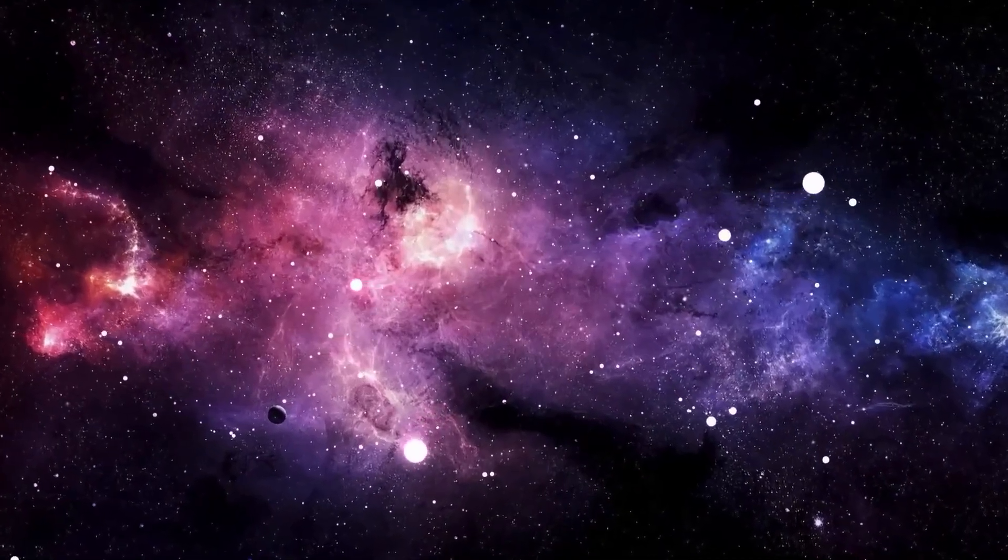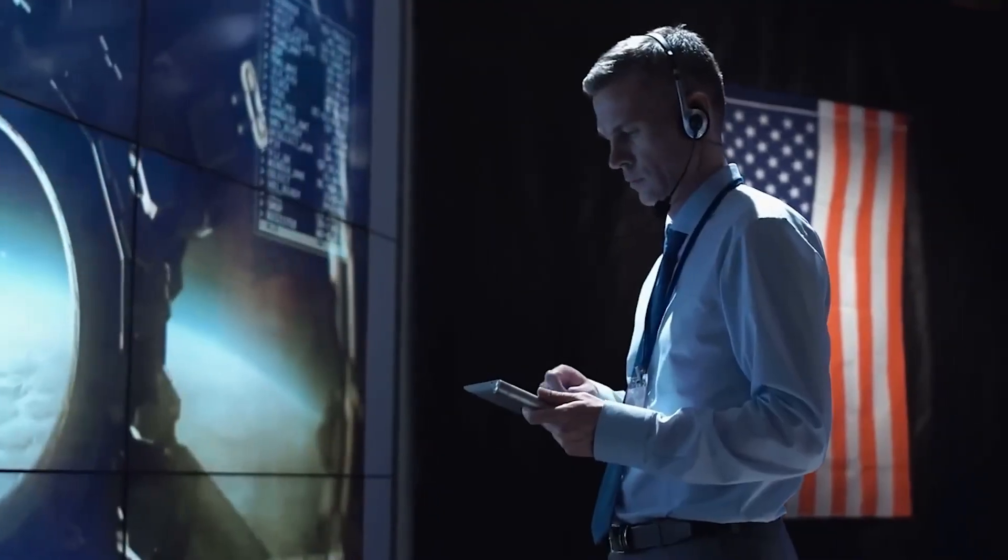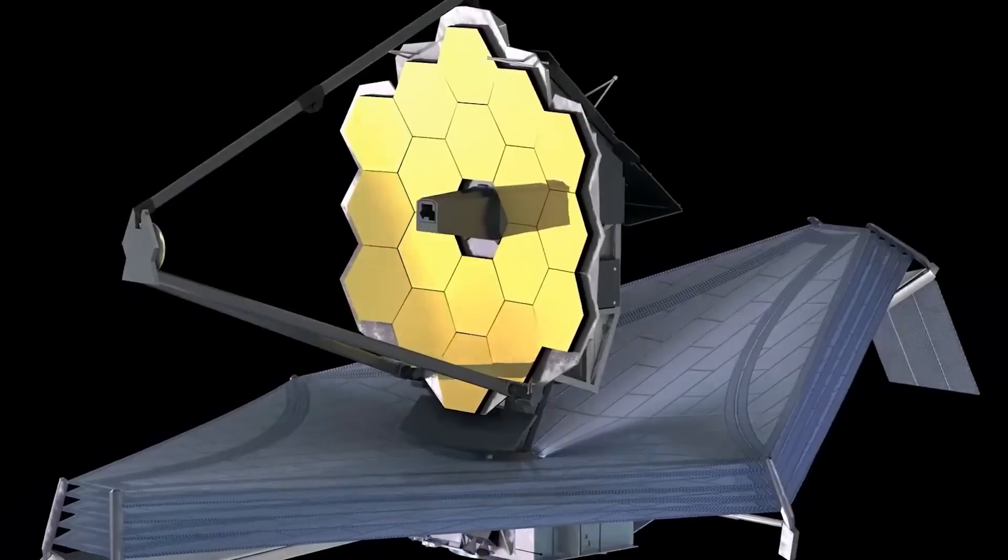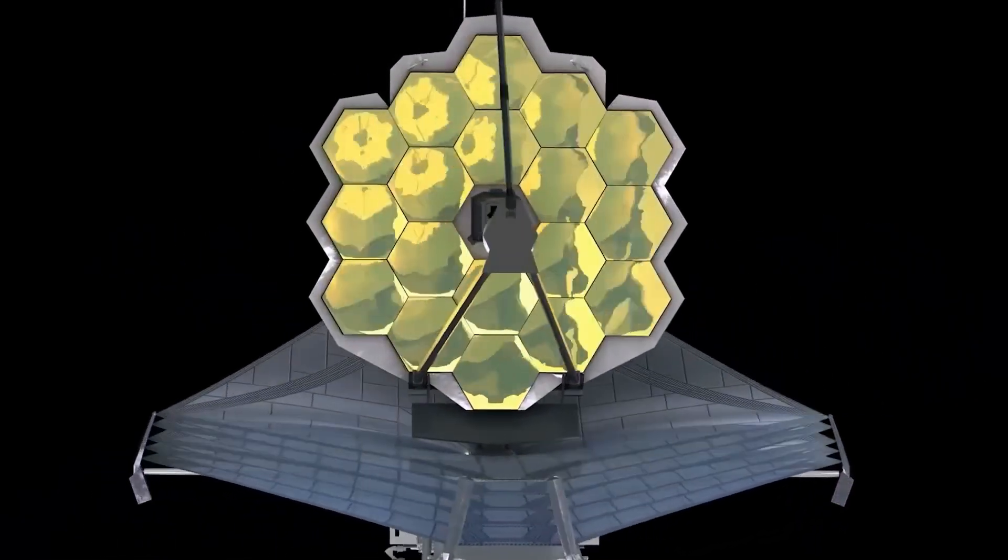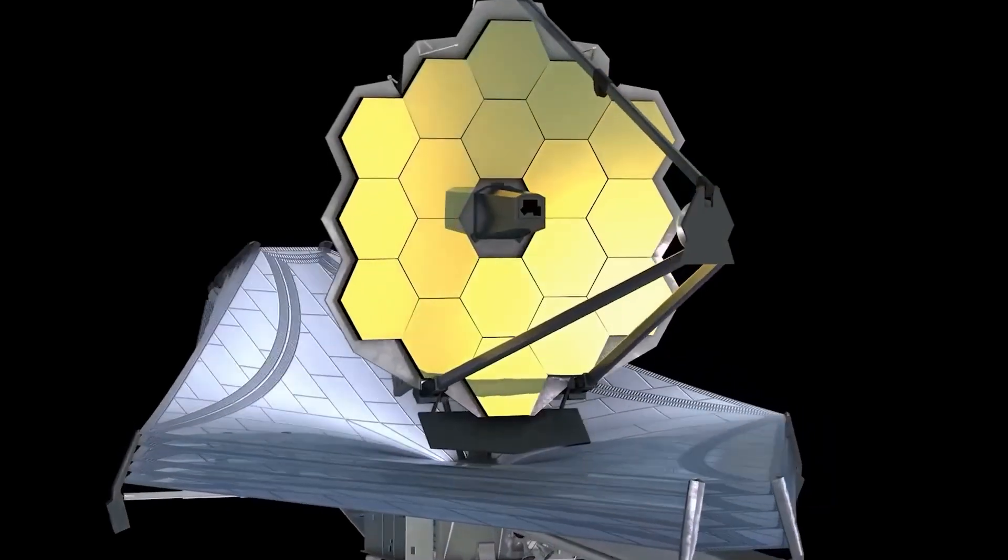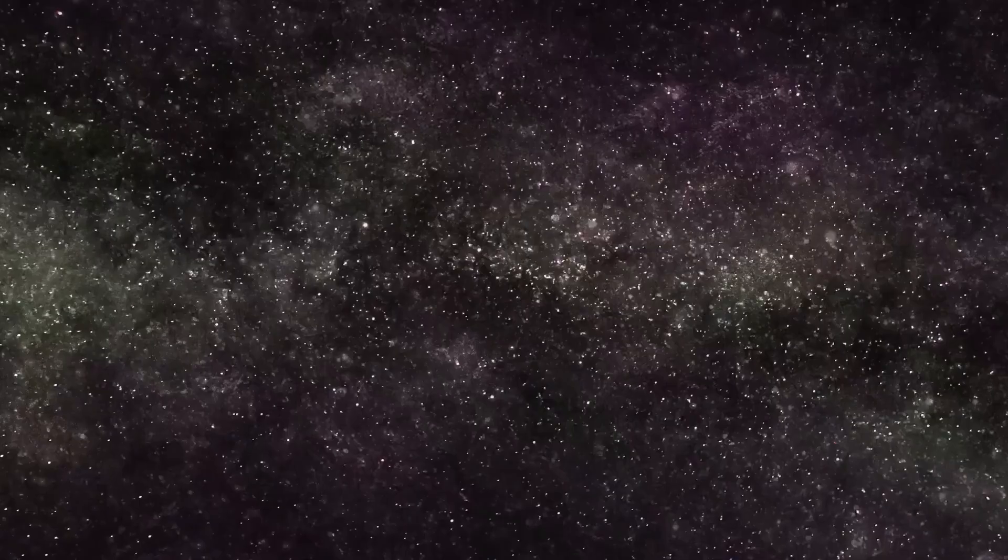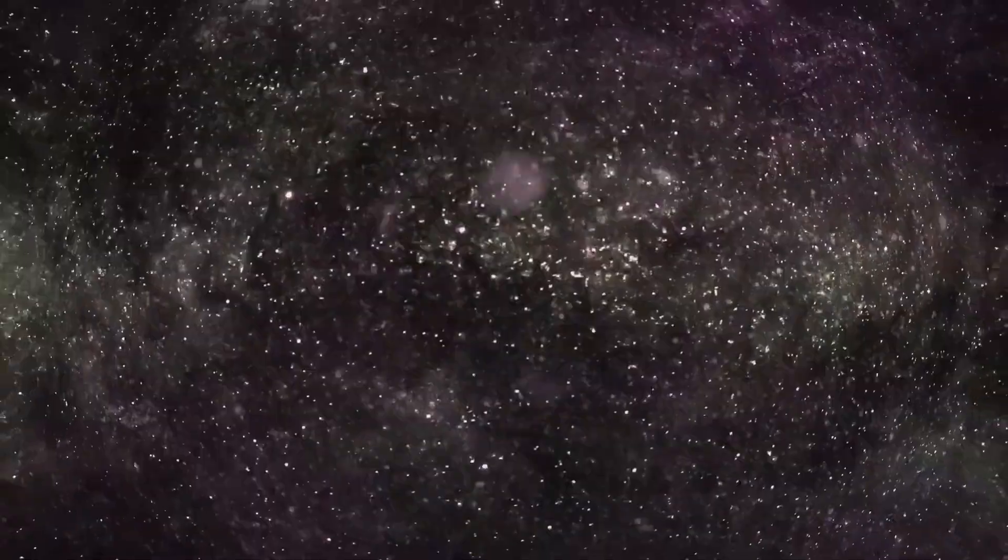The James Webb Space Observatory has done it again. As time goes on and it discovers more about our space, it's fascinating how it manages to redefine virtually everything we thought we knew about space or defy calculations made by scientists. Recently, the James Webb has detected an object that is 100 times larger than the Milky Way. How did it manage to discover such a structure and what does this mean for humanity?